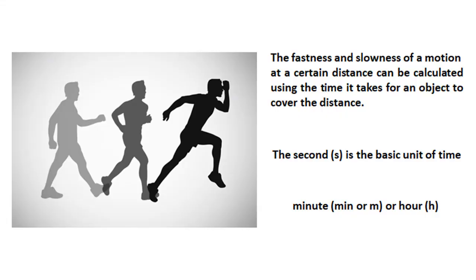The fastness and slowness of a motion at a certain distance can be calculated using the time it takes for an object to cover the distance. The second is the basic unit of time, but for longer durations, minute or hour may be used.